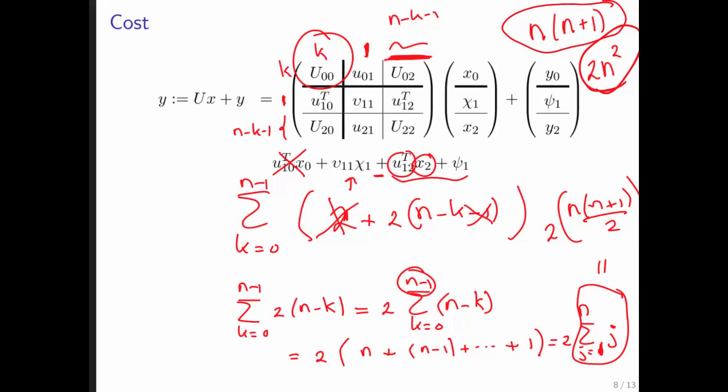The cost now of performing a triangular matrix vector multiply, if we take advantage of the fact that there are zeros sitting there, is roughly half as much as if you did not take advantage of those zeros. That means you will complete your triangular matrix vector multiply roughly twice as fast. And that's a good thing.